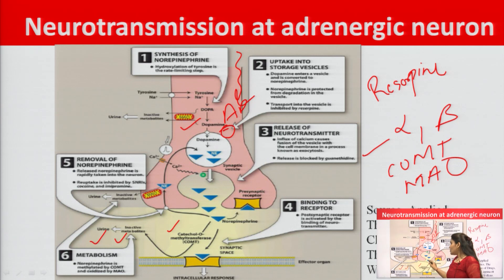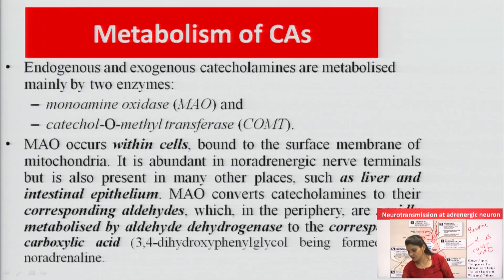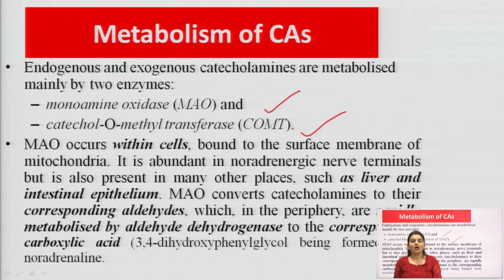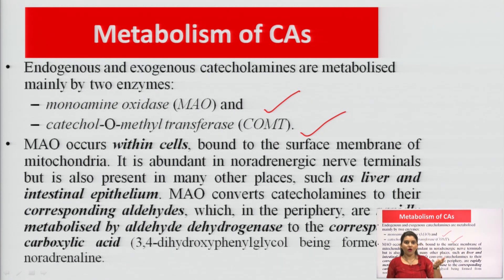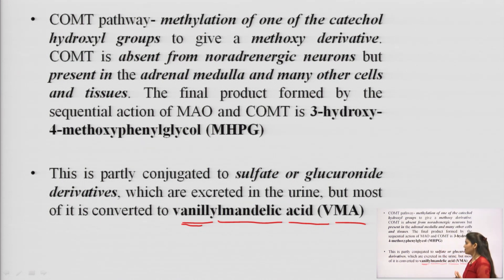Excessive neurotransmitter is taken back up into the synaptic nerve ending via the norepinephrine transporter (NET). This covers synthesis, storage, release, reuptake, and destruction of the neurotransmitter. The end product of catecholamine metabolism by MAO and COMT is vanillylmandelic acid (VMA), the inactive metabolite of noradrenaline metabolism.